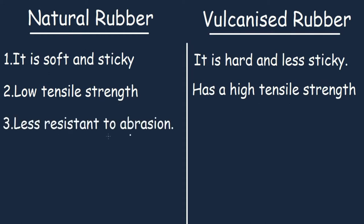Natural rubber has less resistance to abrasion, while vulcanized rubber is highly resistant to abrasion.